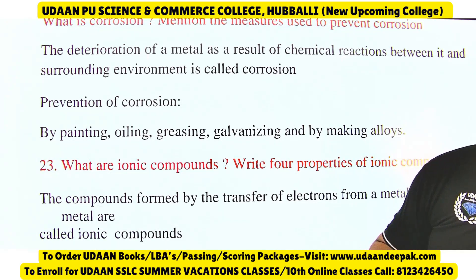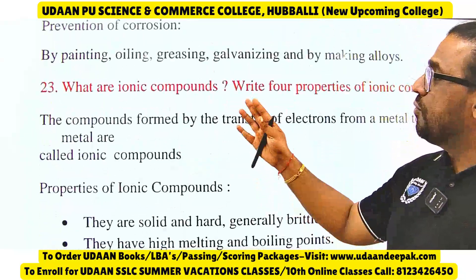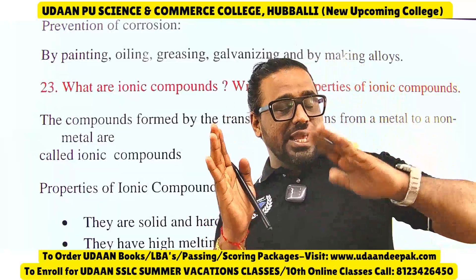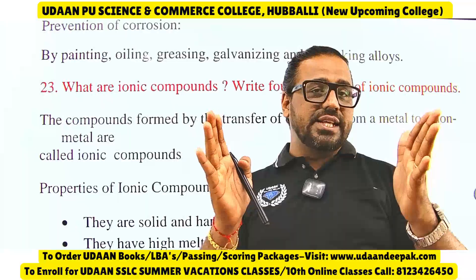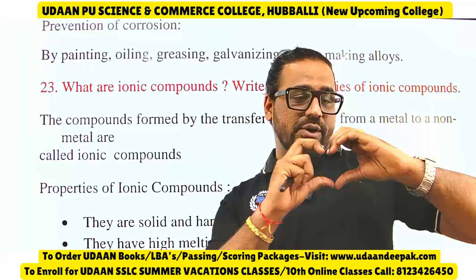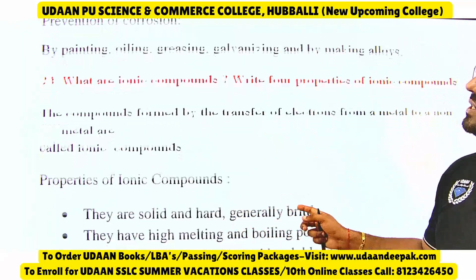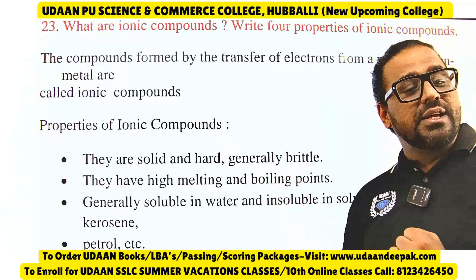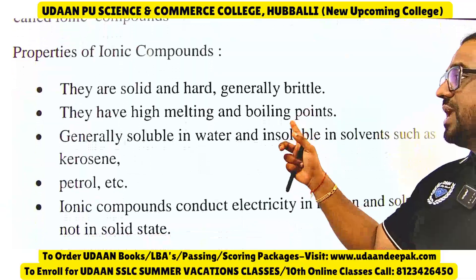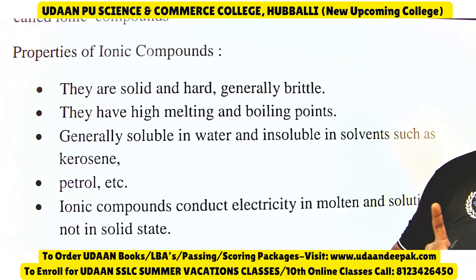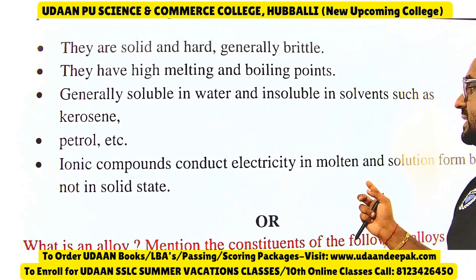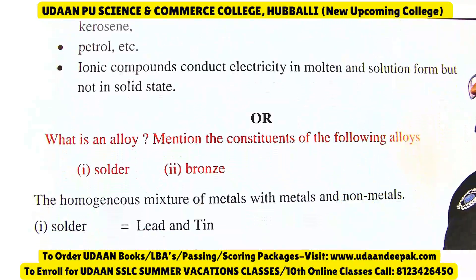Ionic compounds: the bond is formed by the transfer of electrons from a metal to a non-metal. NaCl is an example — sodium is the metal, chlorine is the non-metal. Properties of ionic compounds: they are solid and hard, generally brittle, have high melting and boiling points, are soluble in water, and insoluble in organic compounds such as petrol and diesel. Ionic compounds conduct electricity in molten state and solution form but not in solid state.